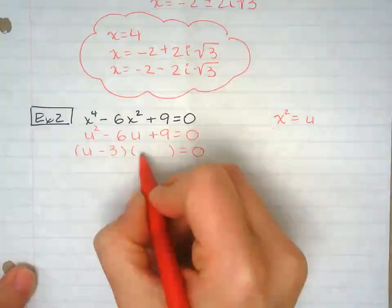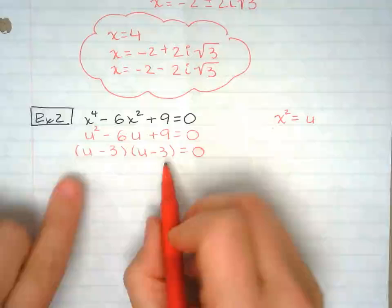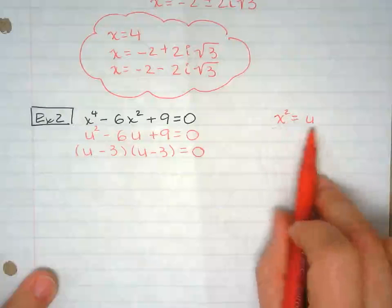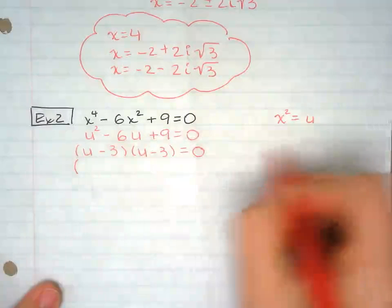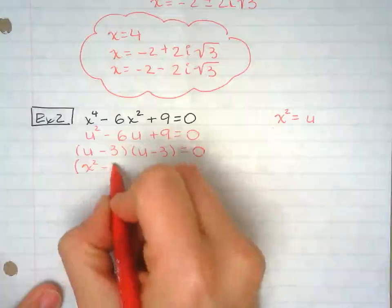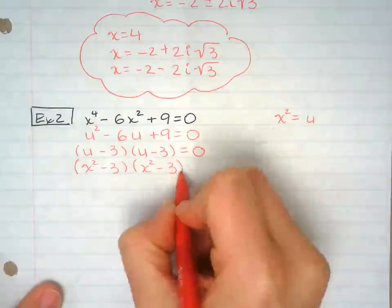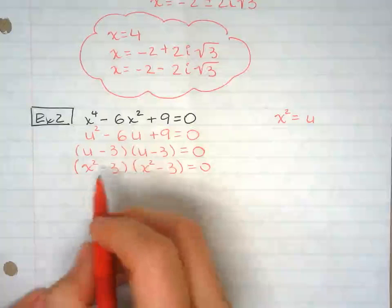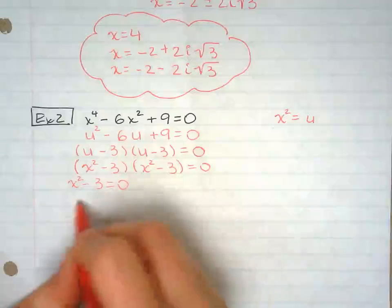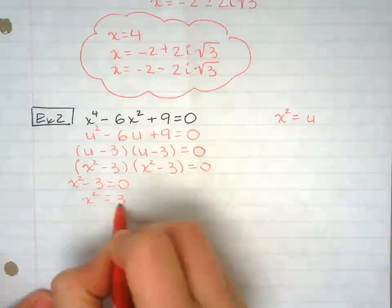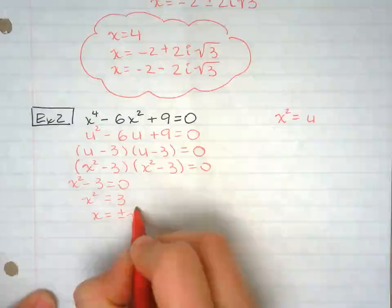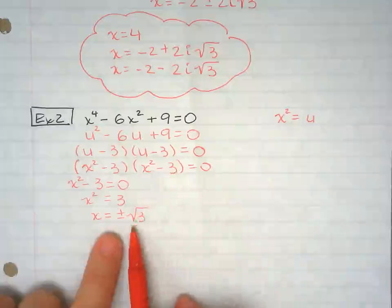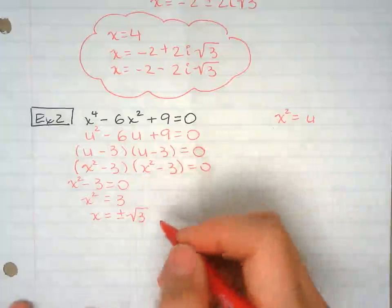Now it's easy because I can just factor this mentally. And I know negative 3 times negative 3 equal positive 9. If I add negative 3 with negative 3, I have negative 6. But don't forget that I substituted x squared for u before I even started. So I'm going to switch this back into x squared. Now I set each factor equal to 0. And the good thing is I know that they're the same, so I'm just going to do it once.